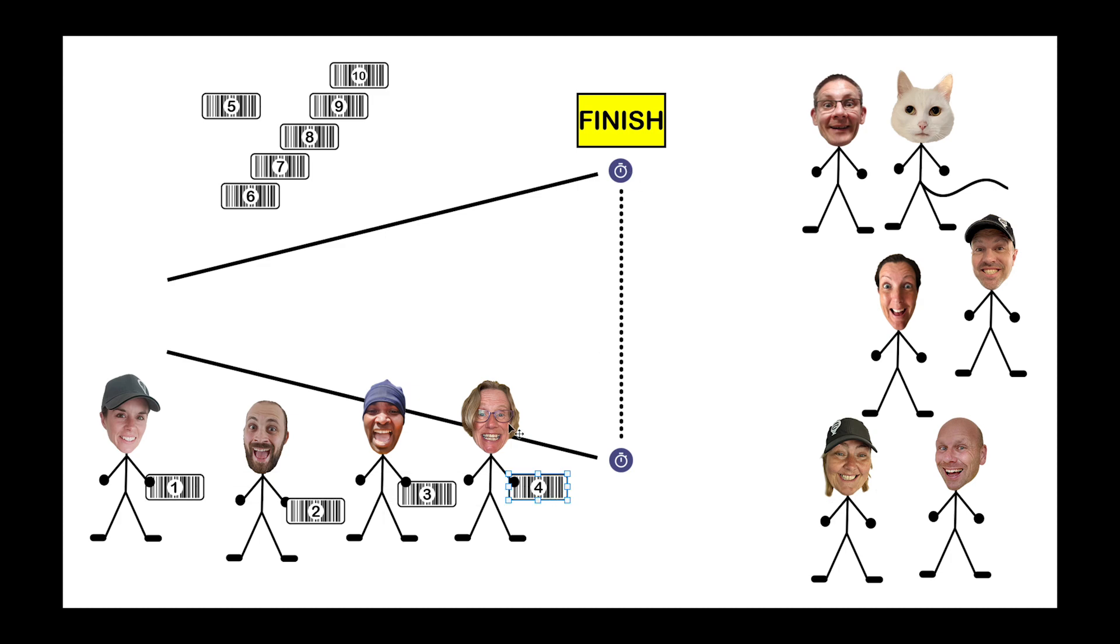All being well, the ten perfect parkrun participants will cross the line, take a token, get scanned, and then off home they go. The ten times taken get matched to the ten position tokens given out. And there we go. A set of accurate results is produced. That's the ideal.